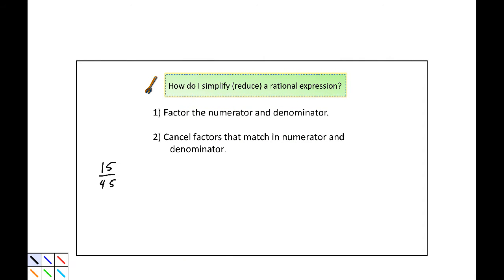How do I simplify or reduce a rational expression? The first step is to factor the numerator and the denominator. Second, we can then cancel factors that match in the numerator and denominator.